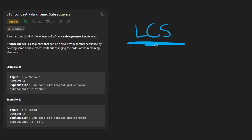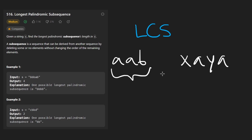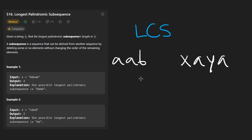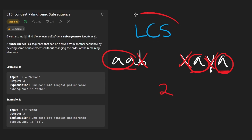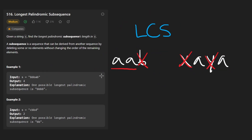The LCS algorithm takes two strings, such as a, a, b and x, a, y, a. With these two strings we find the length of the longest common subsequence. If we take the first two a's from the first string and the two a's from the second string, they are the same string — two a's. So the length is going to be two. We can be really clever and apply this algorithm to this problem, even though there's just a single input string.